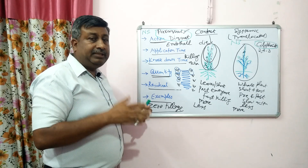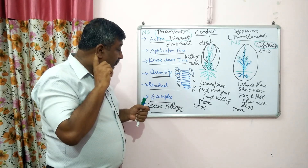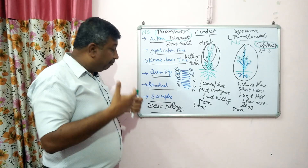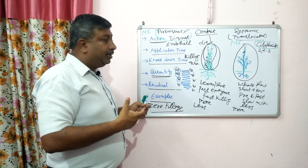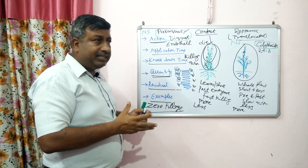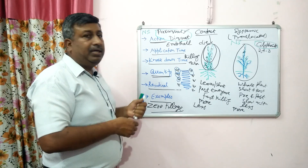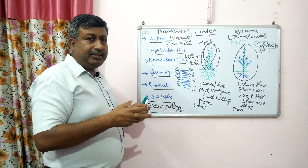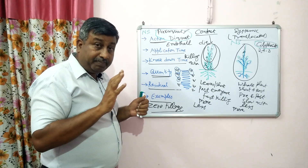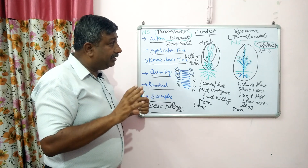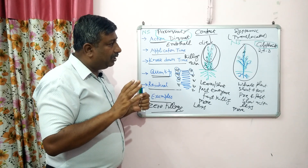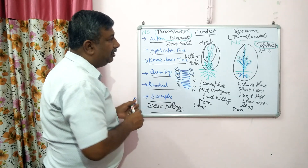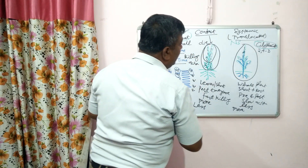Contact herbicides are used in areas where immediate action and immediate killing are required, particularly in zero tillage systems where more quantity is required to cover the whole biomass. Systemic herbicides require less quantity and can be used in the crop, provided they are selective. Except for glyphosate, almost all systemic herbicides available are selective.